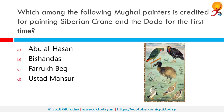Which among the following Mughal painters is credited for painting the Siberian Crane and the Dodo for the first time? The correct answer is Ustad Mansur. He started his career during the last few years of Akbar's reign and flourished during the time of Jahangir. He was a leading painter in Emperor Jahangir's court, famous for depicting plants and animals. His most important paintings were of the Siberian Crane and Dodo. The Siberian Crane painted on paper is highly intricate, showing the wrinkles on the bare skin, the legs and a small feather stuck to the claw.